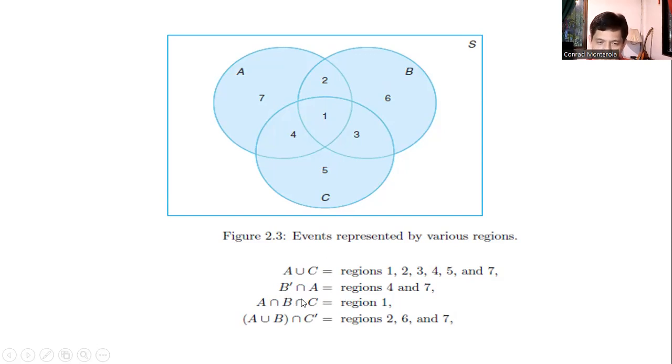And then finally, first you get the union of A with B. So that's the first step. So that's 7, 2, 4, 1, 6, 3. Then you get the intersection with, I think this is C'. So C' is outside. So what remains is 7, 2, 6, or 2, 6, 7. I hope you get this.